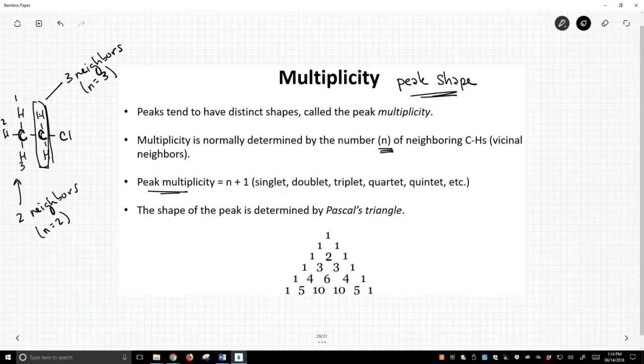Okay, so peak multiplicity is the number of neighboring hydrogens plus one. So if you have a poor hydrogen that has no neighbors, its multiplicity is not zero, its multiplicity will be number of neighbors plus one. It'll be one.